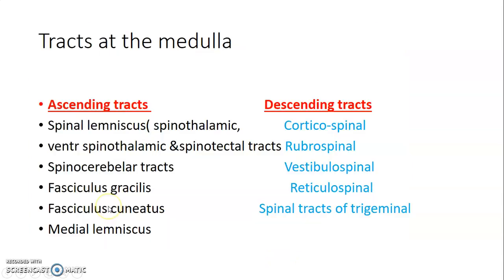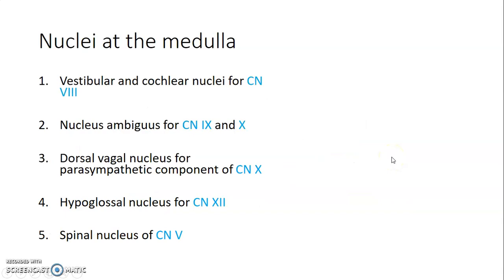Regarding tracts in the medulla: ascending tracts carry information from other parts to the brain cortex, while descending tracts go from the brain downward to the spinal cord. Ascending tracts include the lateral and ventral spinothalamic tracts, spinotectal tracts, spinal cerebellar tract, fasciculus gracilis, fasciculus cuneatus, and the medial lemniscus. Descending tracts include corticospinal, rubrospinal, vestibulospinal, reticulospinal, and the spinal tracts of the trigeminal nerve.